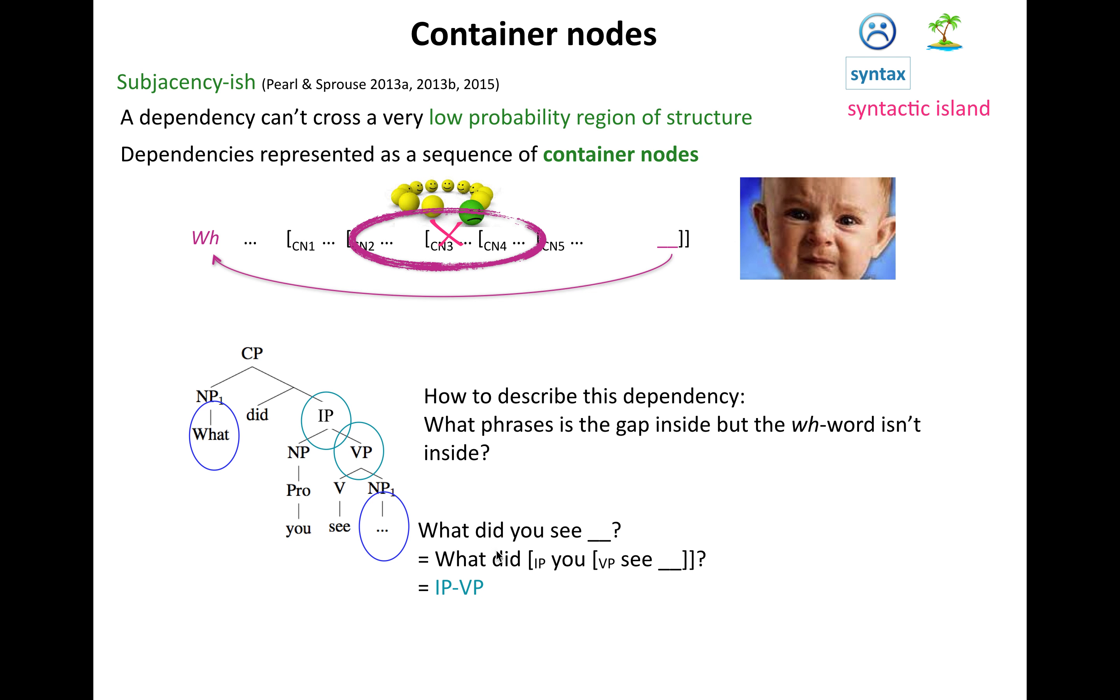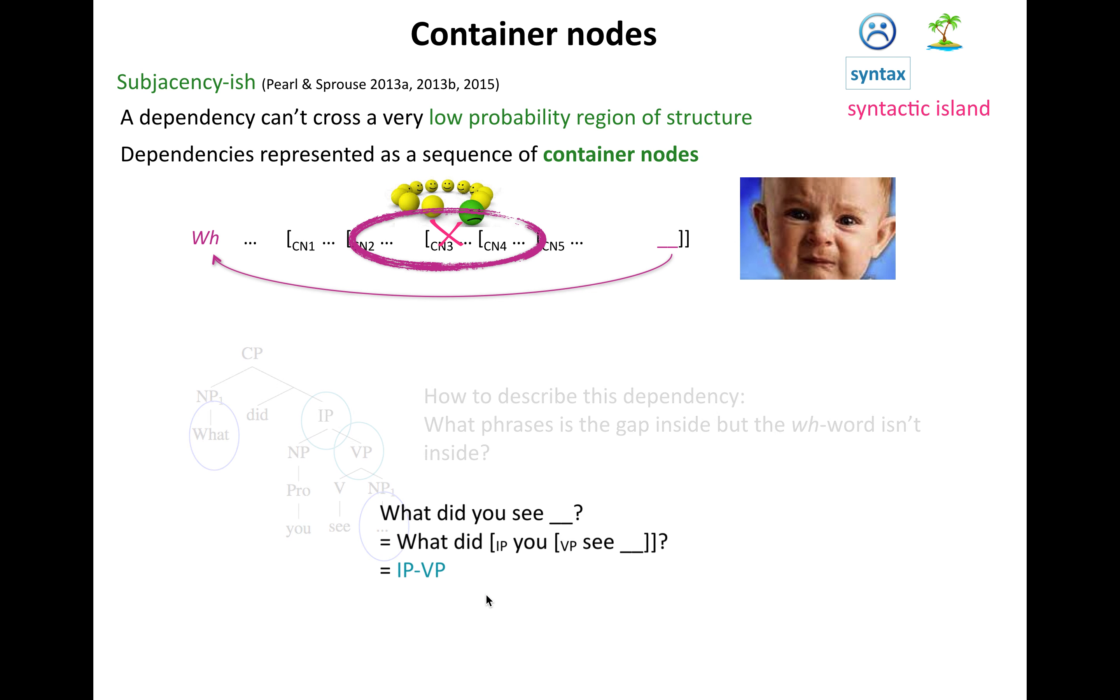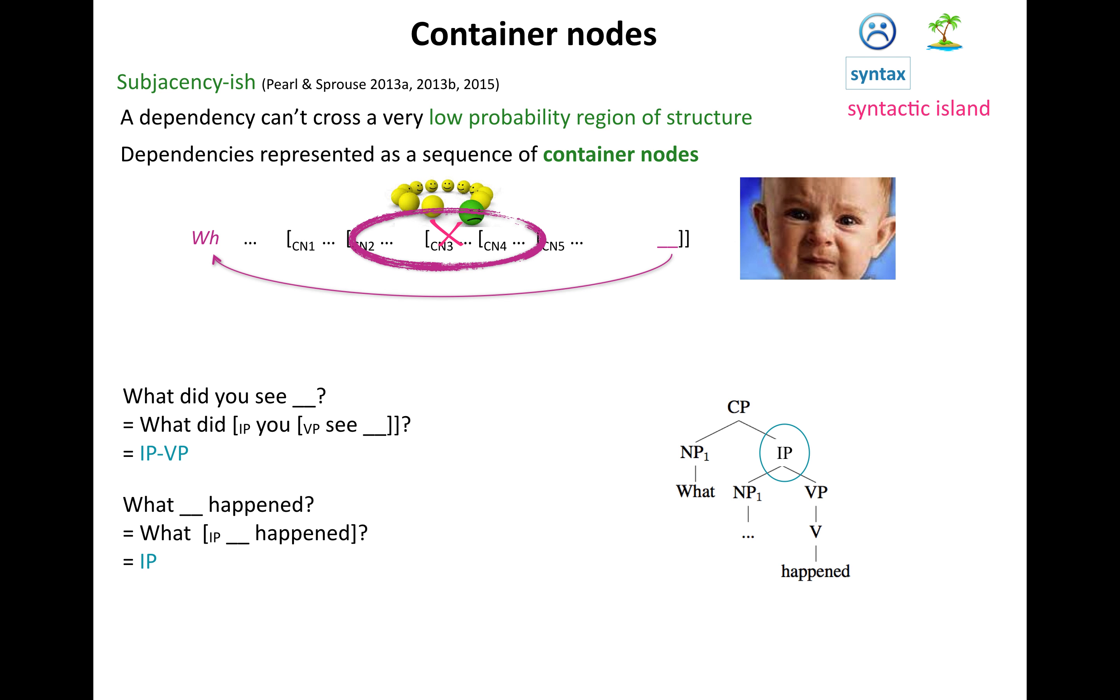So the way to represent this dependency is as a sequence of these little node guys, in this case, as a sequence IP-VP. Sort of flattening it out. And you can do this for a lot of different dependencies, in fact, all different dependencies.